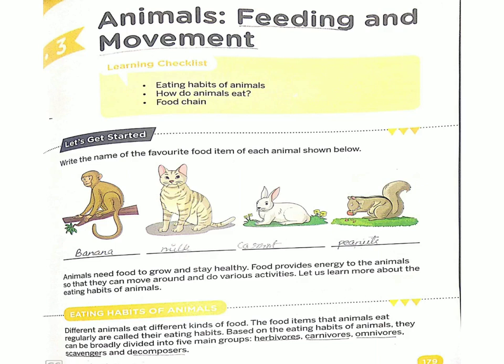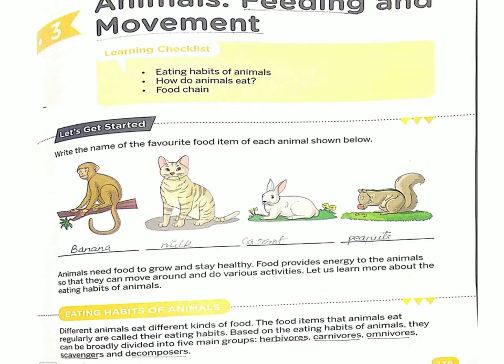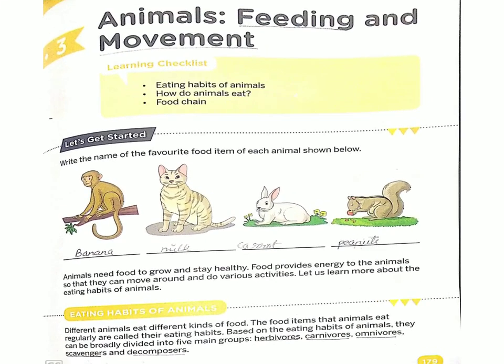Let us learn more about the eating habits of animals. Different animals eat different kinds of food — alag-alag animals alag-alag type ke food eat karte hain. The food items that animals eat regularly — jo animals daily basis pe khate hain — are called their eating habits, unhain unki eating habit kaha gaya hai.